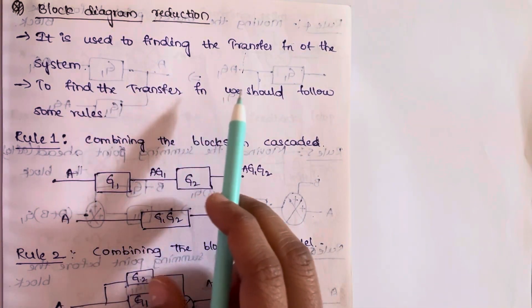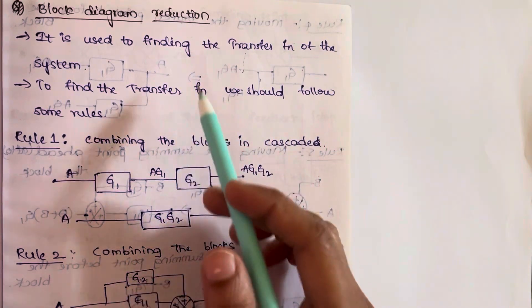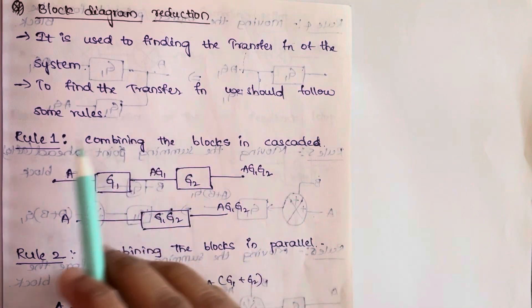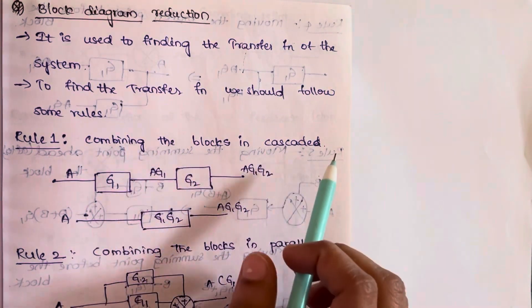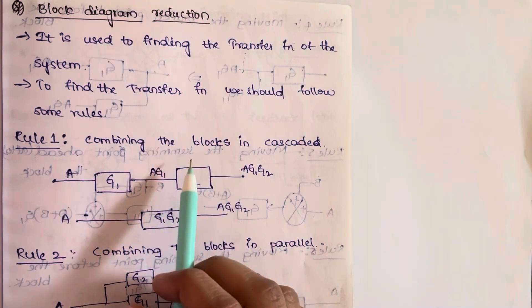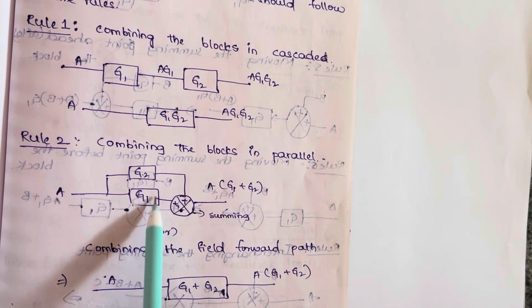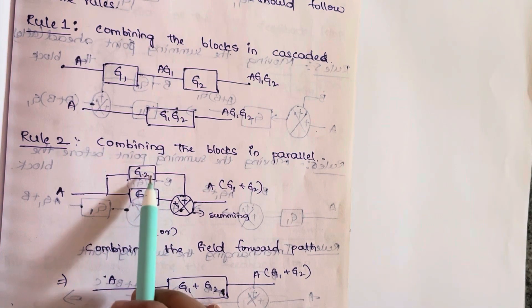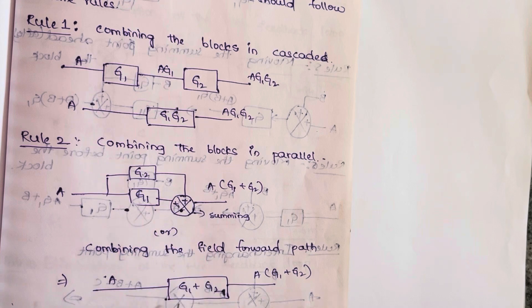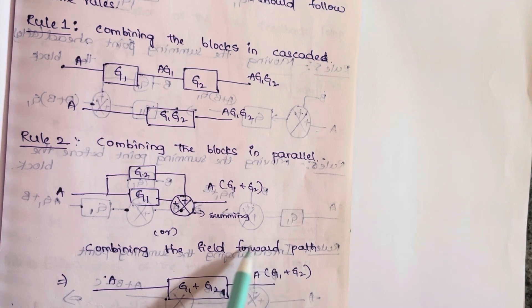To find the transfer function we need to follow some basic rules. Rule 1 is combining blocks in cascade: if there are two different blocks and we cascade them, we get the multiplication of those two, that is G1 into G2. Rule 2 is combining blocks in parallel: if G1 and G2 are two blocks in parallel and we combine them along the forward path, we get G1 plus G2, and at the output side we get A into (G1 plus G2).